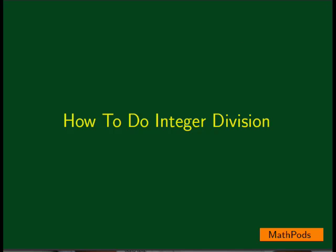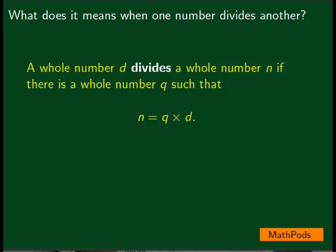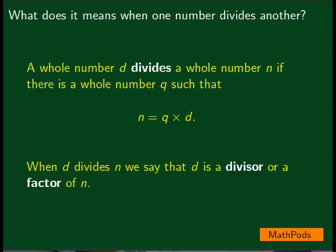How to do integer division. What does it mean when one whole number divides another? A whole number d divides a whole number n if there's a whole number q such that n is equal to q times d. When d divides n, we say that d is a divisor or a factor of n.